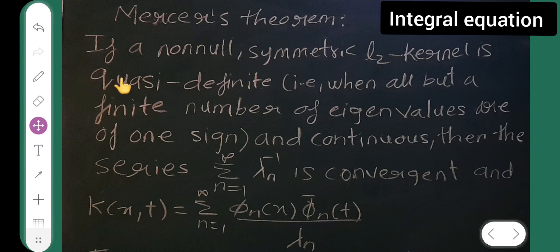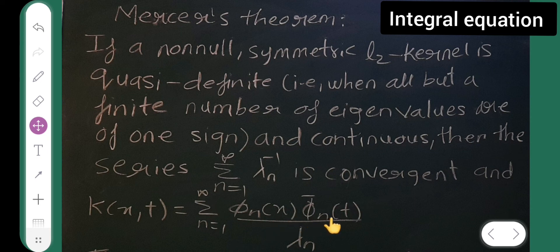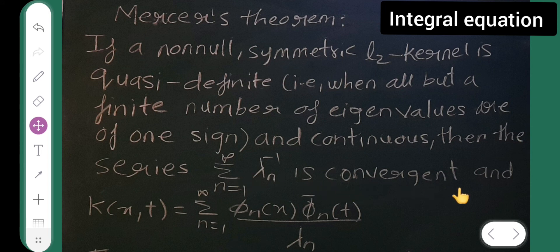For the theorem, the statement is: if a non-null symmetric L2 kernel is causative finite and continuous, then the series summation from n=1 to infinity of λn inverse is convergent, and k(x,t) is equal to the summation from n=1 to infinity of φn(x) times φn-bar of t divided by λn. So this series is convergent and the kernel equals this expression.